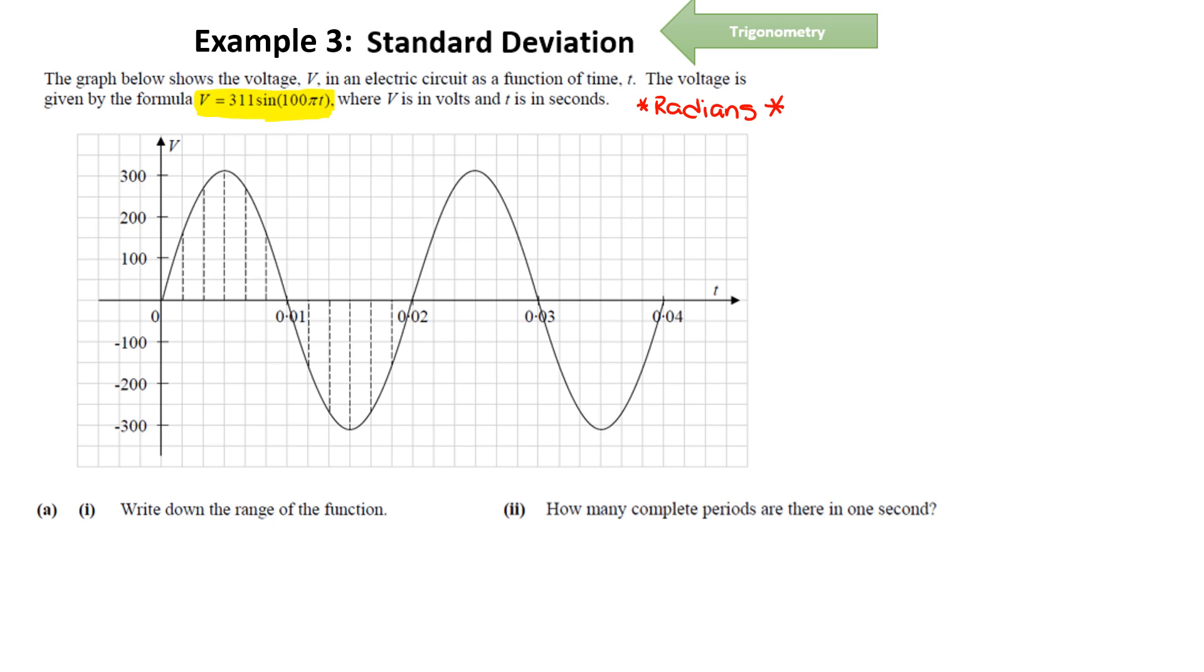So write down the range of this function. So it's a quite straightforward sine function. There is no movement from the midline, which means the range of the function is going to be minus 311 to 311. And that comes from the 311 at the start of the function. A usual range for a sine function is plus 1 minus 1. So when you multiply that by any number, that will create the new range.